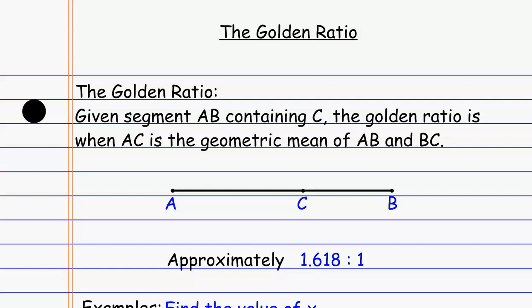So that's what forms the golden ratio. When we have that longer piece as the geometric mean between the whole thing and the smaller piece, the ratio that we get is approximately 1.618 to 1. It's a unique relationship that comes up in a couple of different places and that we use when constructing certain figures, because the golden ratio seems to be more pleasing to the human eye. It's kind of a psychological thing built into our brains.